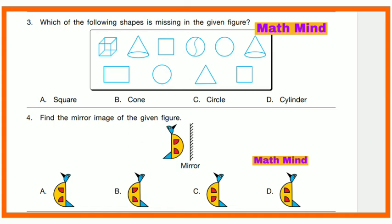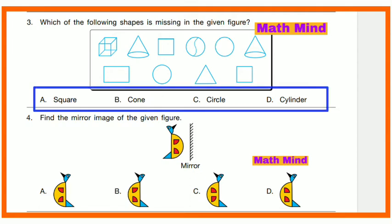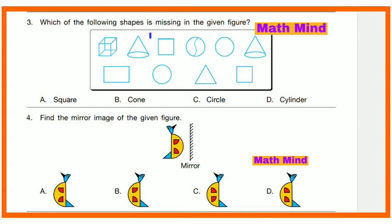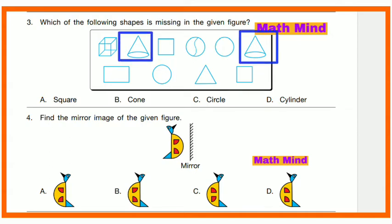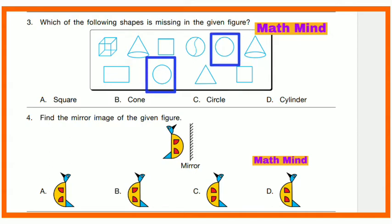Question No. 3: Which of the following shapes is missing in the given figure? Shapes given are square, cone, circle, and cylinder. In the figure, there are squares, cones, and circles, but there is no cylinder. So Option D is correct.